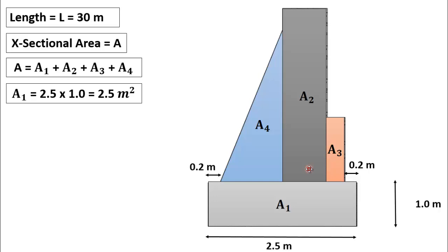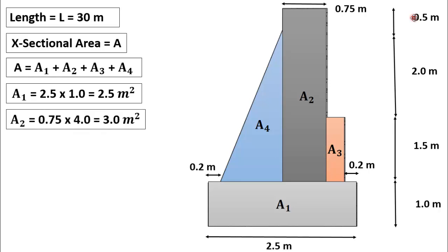Now we will find the cross-sectional area of this second figure which is also a rectangular. Its total height is 1.5 plus 2 plus 0.5 which is equal to 4 meter and its width is 0.75 meter. So area of figure 2 will be equal to A2 which is 0.75 multiplied by 4 which is equal to 3 square meter.